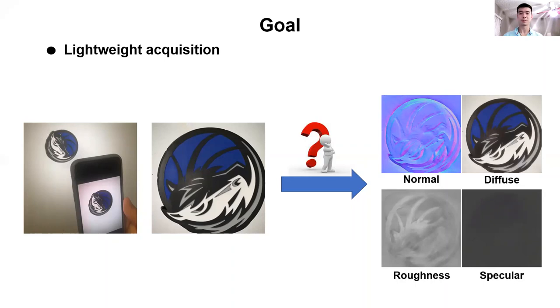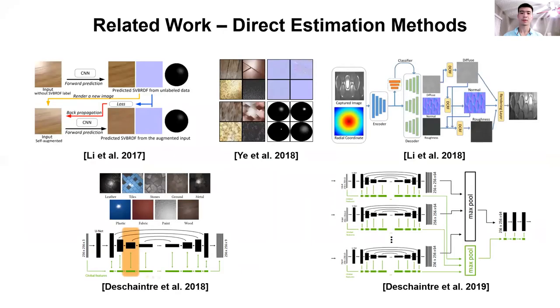This problem has been extensively studied in the past. The most recent methods use deep neural networks, and I'm going to discuss them by dividing them into two categories. The first group of methods directly estimate the material properties using one or multiple images. They train a network taking single or multiple images as input and output estimated material properties. These methods differ in terms of their network architecture, training dataset, and their training strategies.